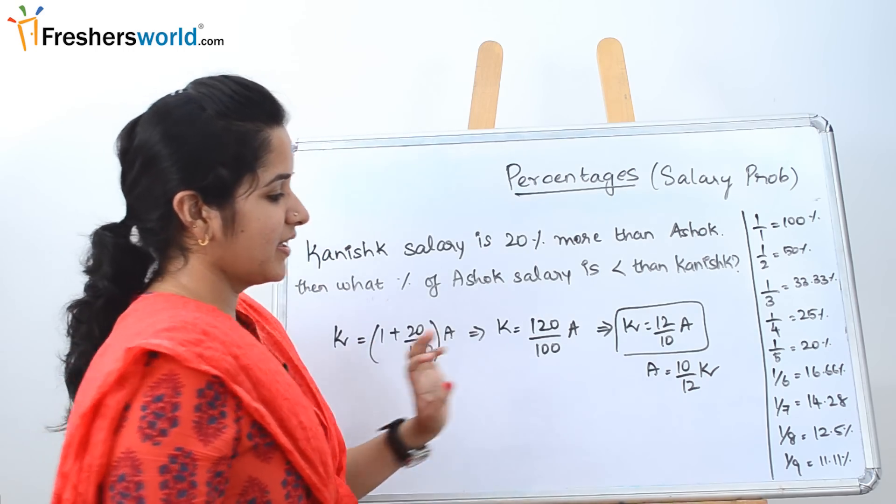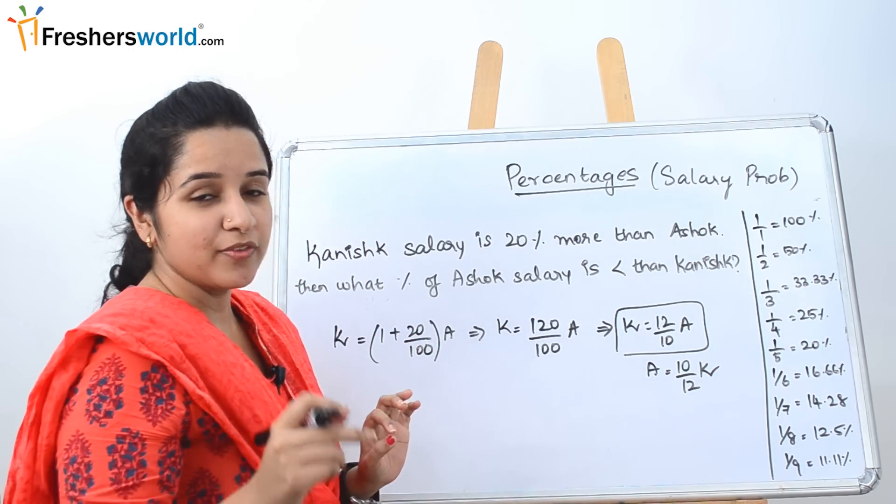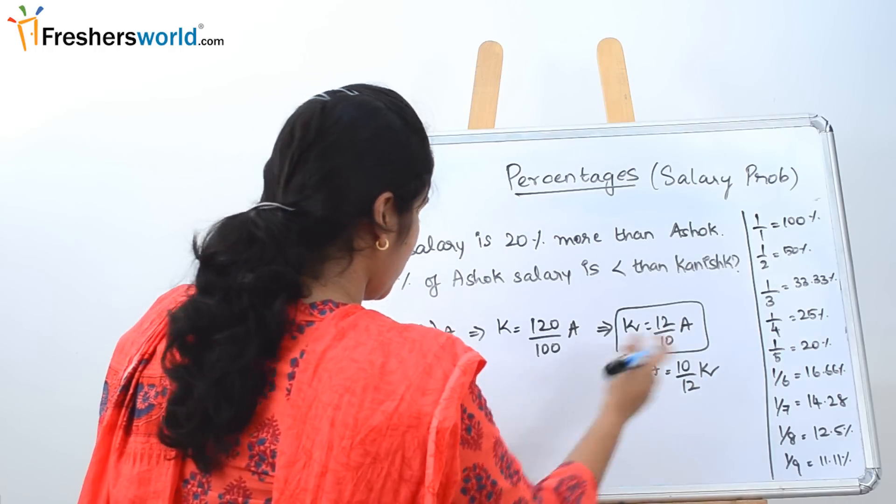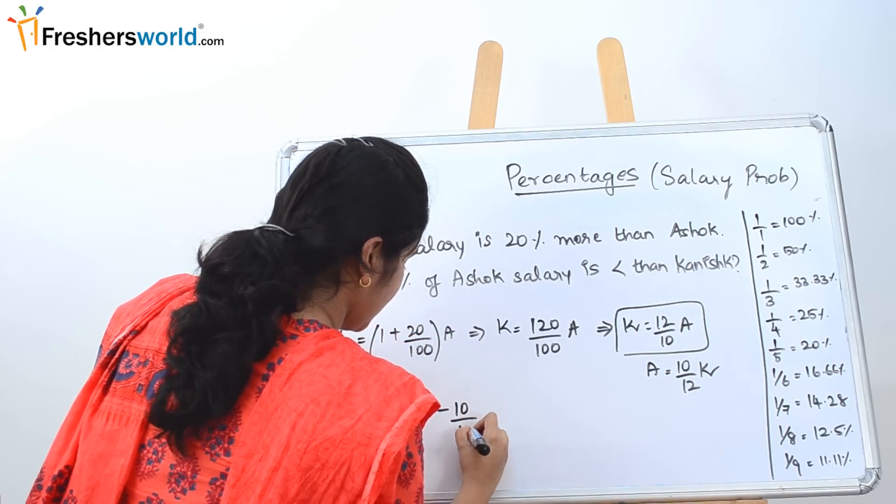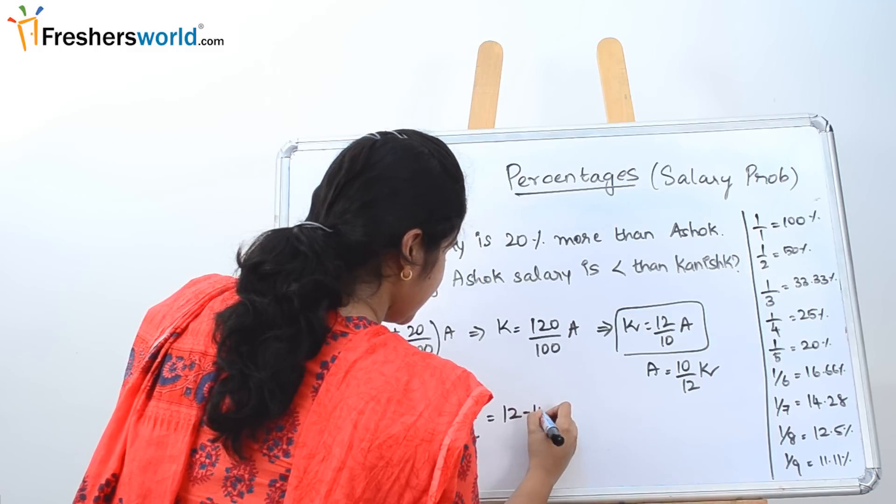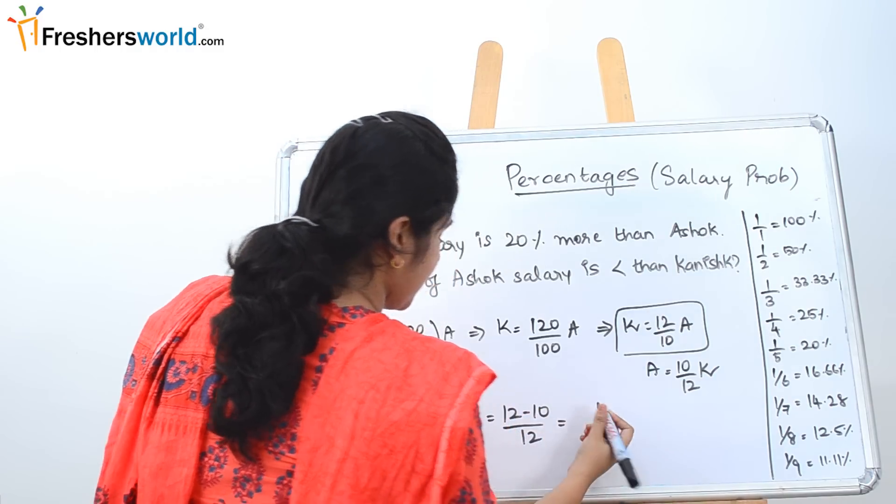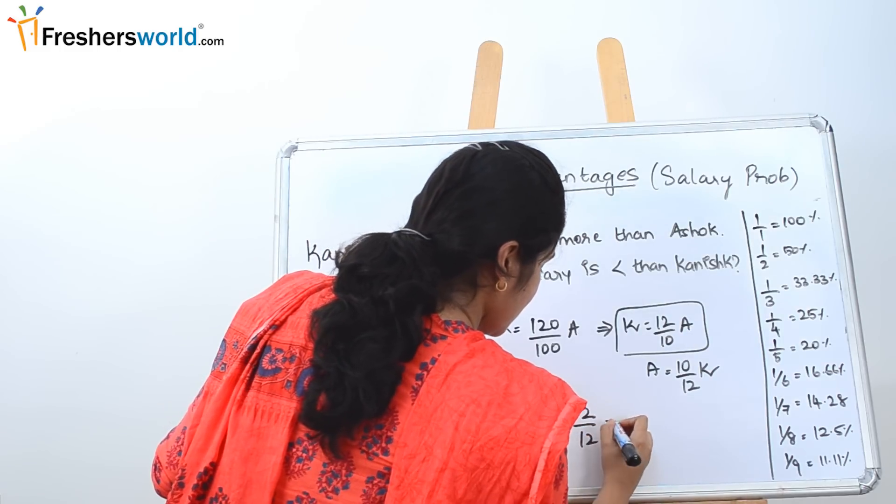Initially, Ashok's salary was 1. Now we are going to reduce it by 10 by 12 of K. So 1 minus 10 by 12, which is nothing but 12 minus 10 by 12, which is nothing but 2 by 12, which equals 1 by 6.